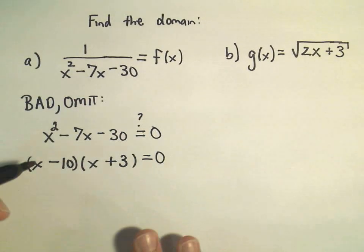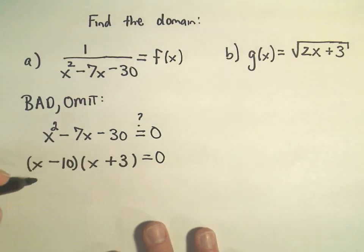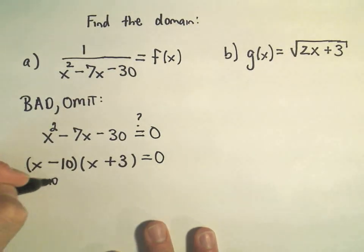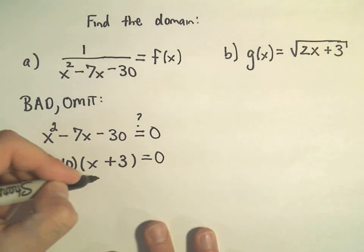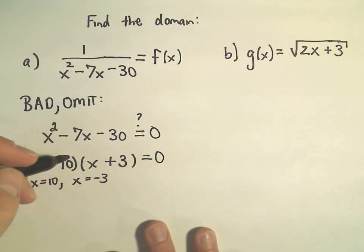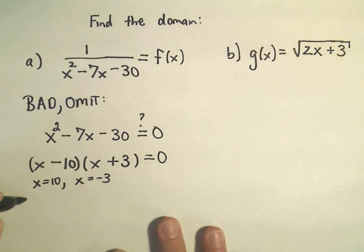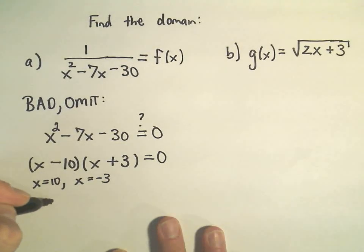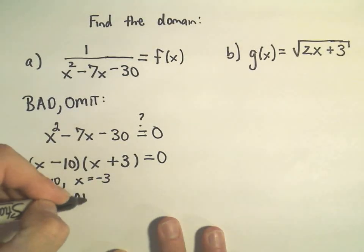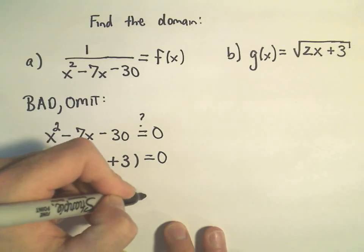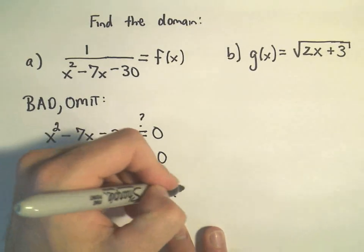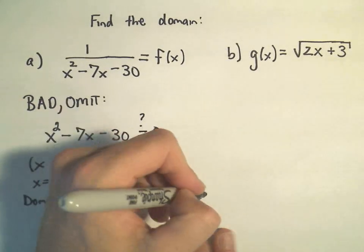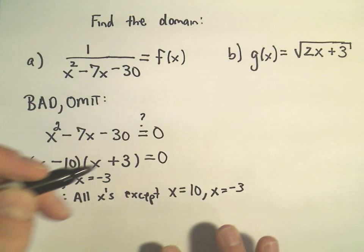And again, I want this to equal 0. So if we set x minus 10 equals 0, we'll get x equals 10 and we'll get x equals negative 3 as solutions. So our domain is going to be all values of x except for x equals 10 and x equals negative 3.